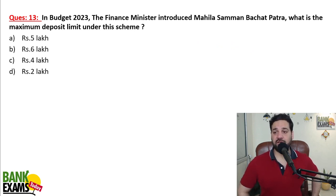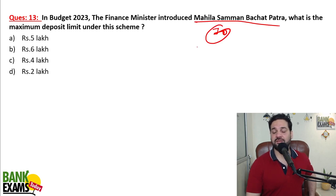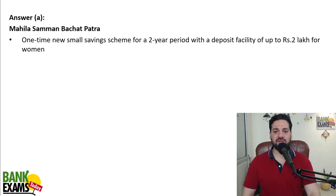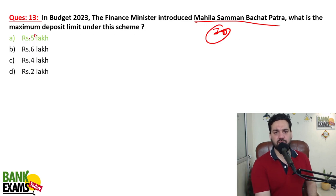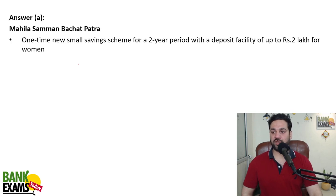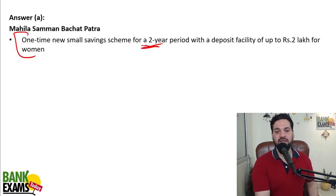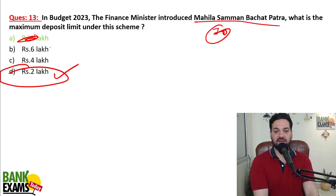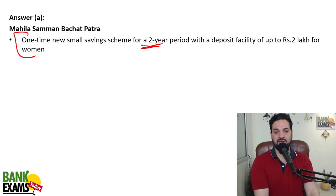In Budget 2023, the Finance Minister introduced Mahila Samman Bachat Patra. Please remember it's important. What is the maximum deposit under this scheme? The maximum deposit is 2 lakh rupees for a 2-year period. It is a one-time new small savings scheme. The answer is 2 lakh, not 5 lakh.